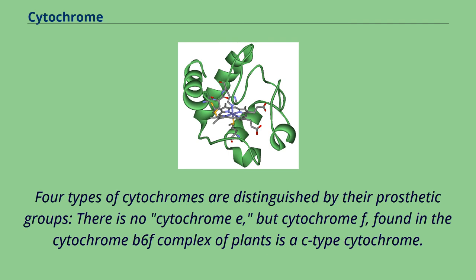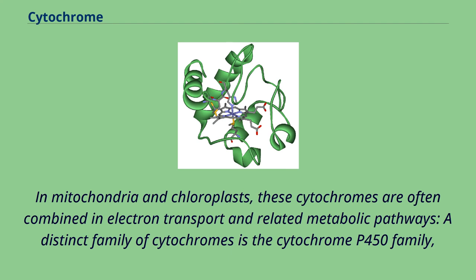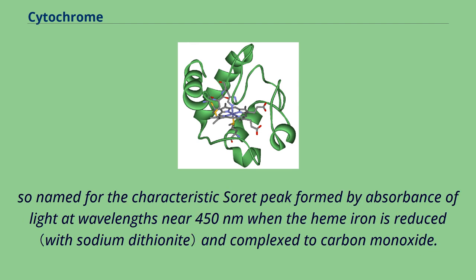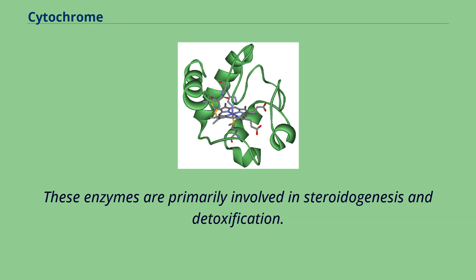Four types of cytochromes are distinguished by their prosthetic groups. There is no cytochrome E, but cytochrome F, found in the cytochrome B6F complex of plants, is a C-type cytochrome. In mitochondria and chloroplasts, these cytochromes are often combined in electron transport and related metabolic pathways. A distinct family of cytochromes is the cytochrome P450 family, named for the characteristic Soret peak formed by absorbance of light at wavelengths near 450 nanometers when the heme iron is reduced and complexed to carbon monoxide. These enzymes are primarily involved in steroidogenesis and detoxification.